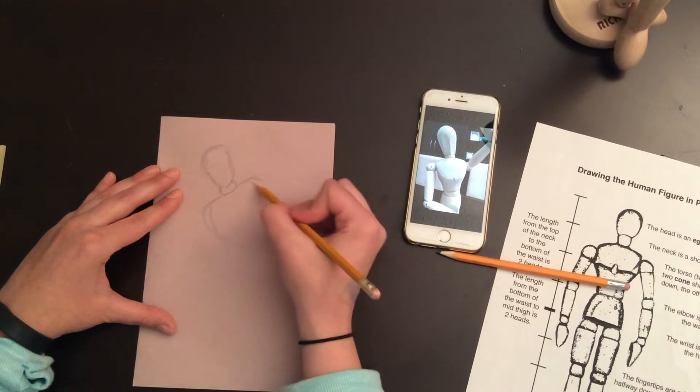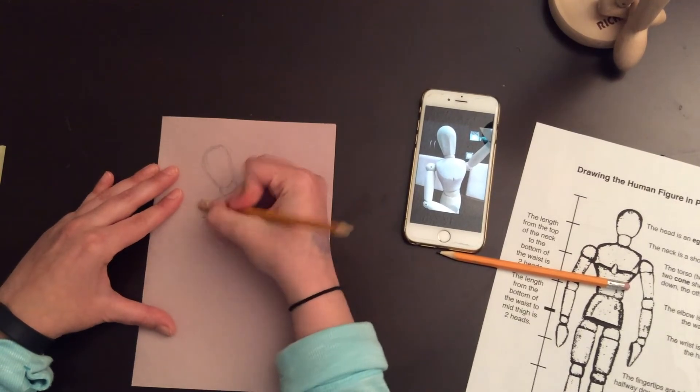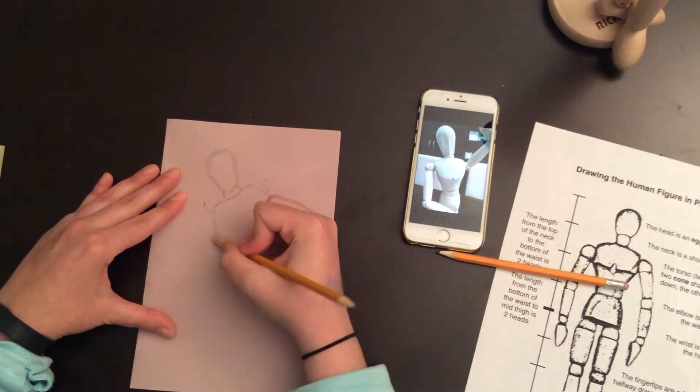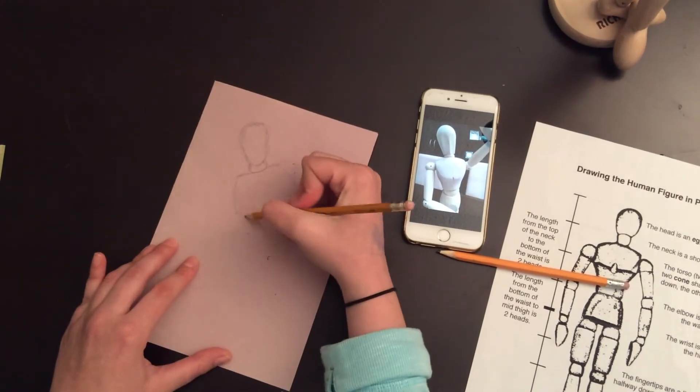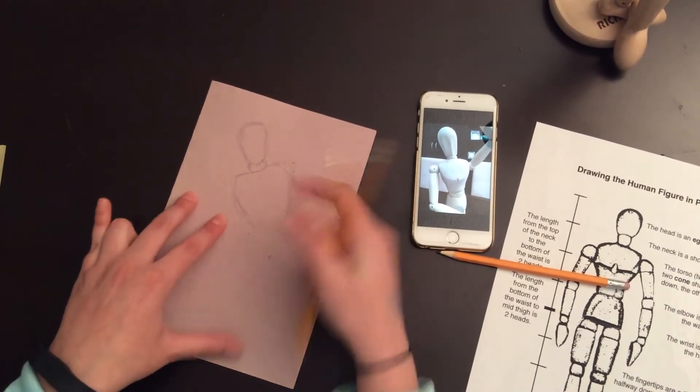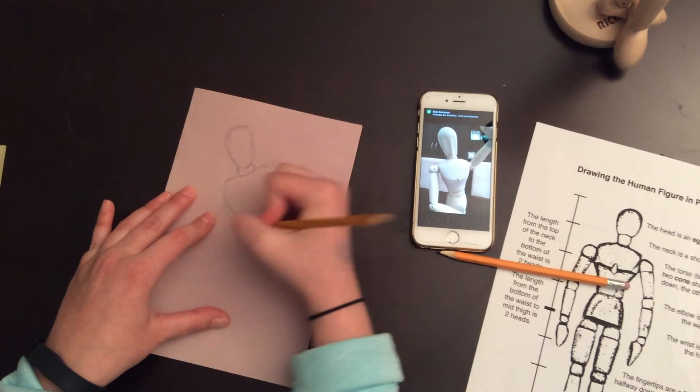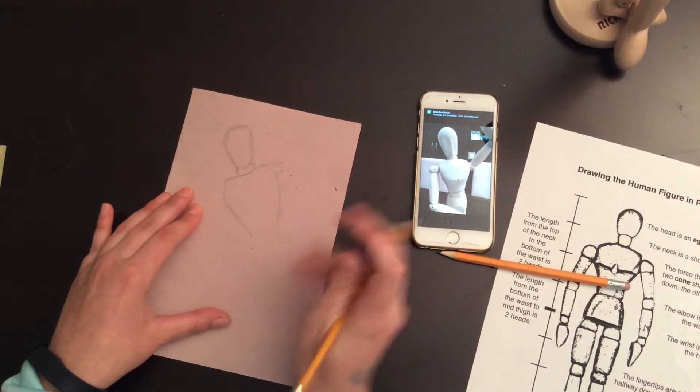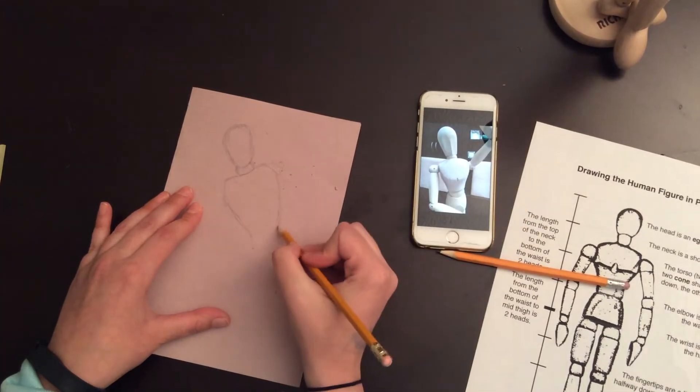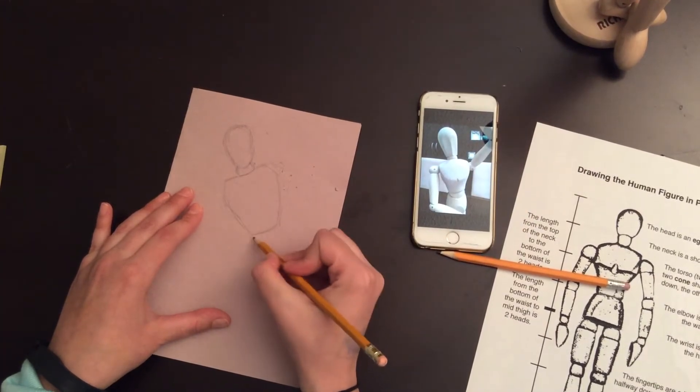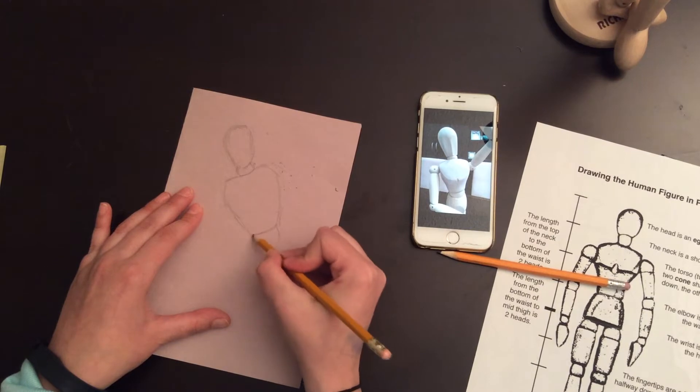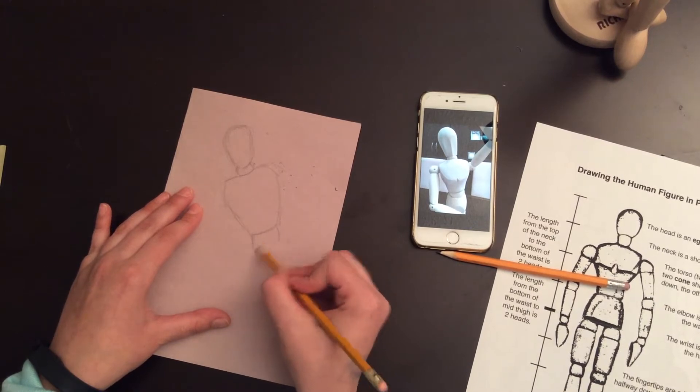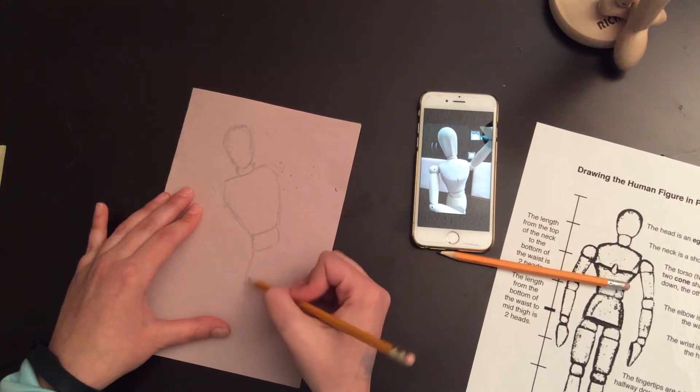I think the shoulders were a bit too wide. We have the waist. This is where the body is starting to get straight again. And we have the hip.